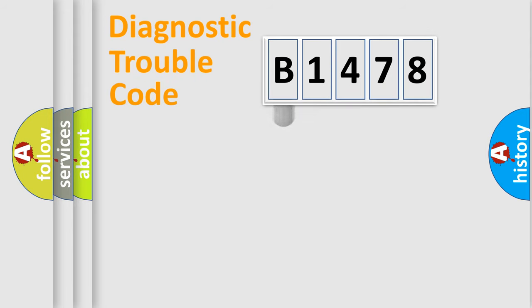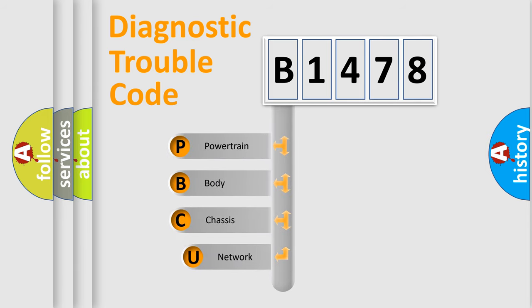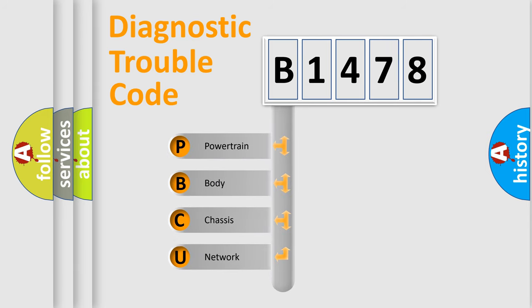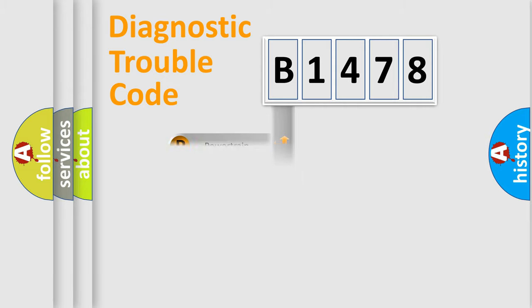Let's do this. First, let's look at the history of diagnostic fault code composition according to the OBD2 protocol, which is unified for all automakers since 2000. We divide the electric system of the automobile into four basic units: Powertrain, Body, Chassis, and Network.